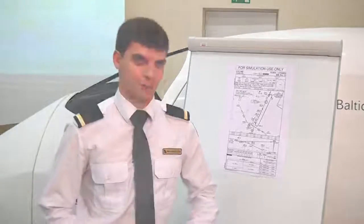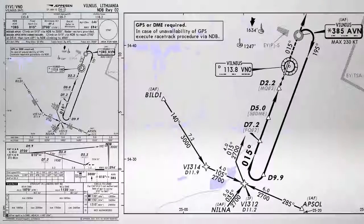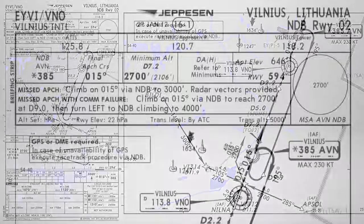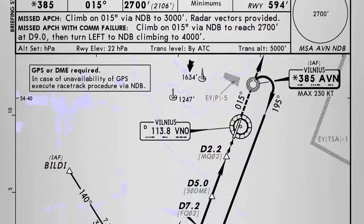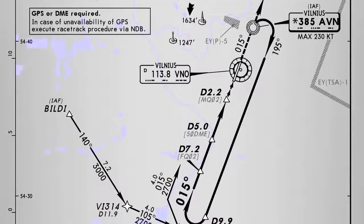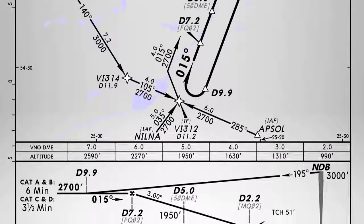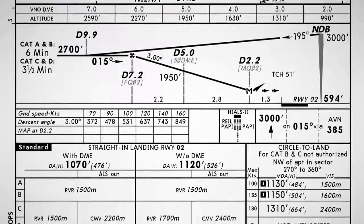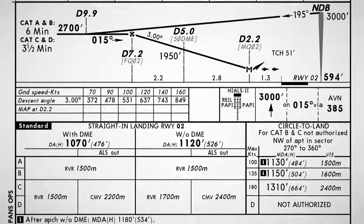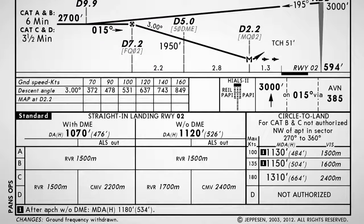Let's look at the chart first. A non-directional beacon or NDB approach is a non-precision approach where the NDB is used as a primary navigational aid. The approach minimums for NDB are usually higher than any other instrument approach, because NDB signals are less precise and are subject to several types of interference.